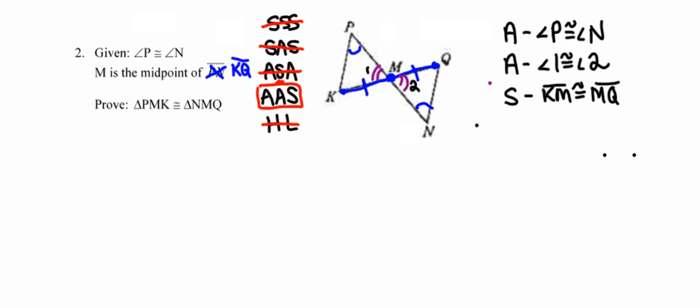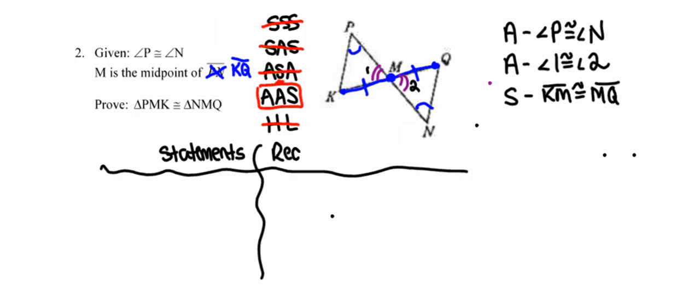Up until now I've always written a flow proof. At this point I'm introducing a second type of formal proof called a two-column proof. Just like its name suggests, it has two columns: the first column is for all your true statements — titled 'Statements' — and the other column is for the reasons those statements are true — titled 'Reasons.' For my first statement: angle P is congruent to angle N, and the reason is that it's given.